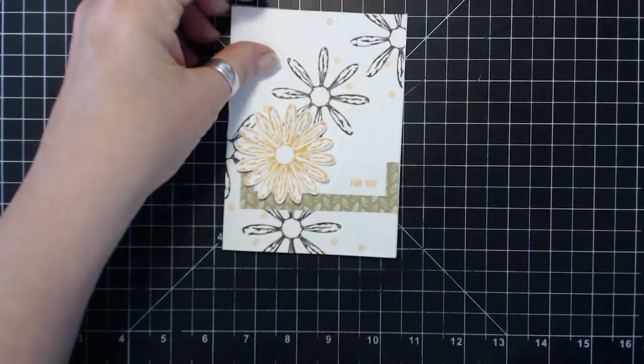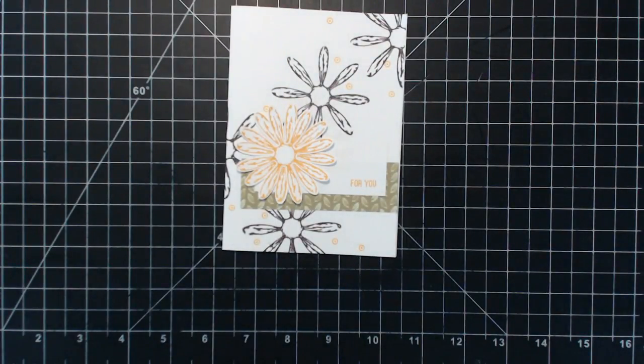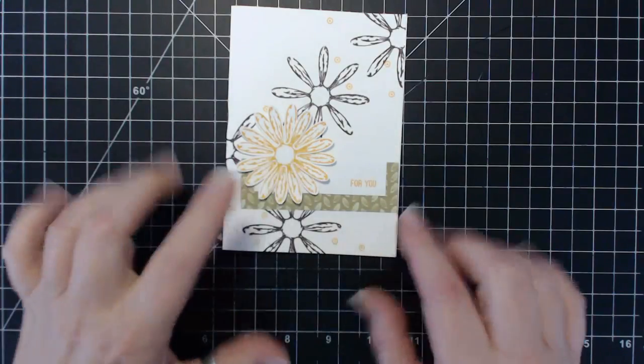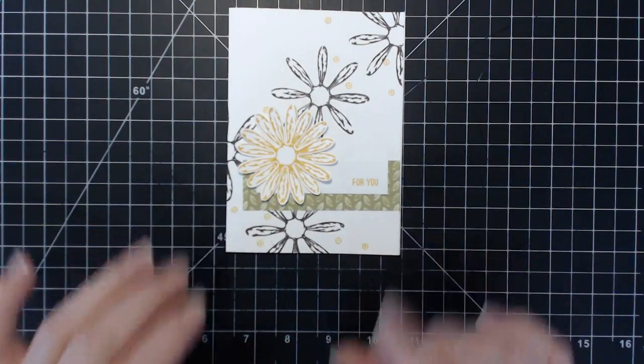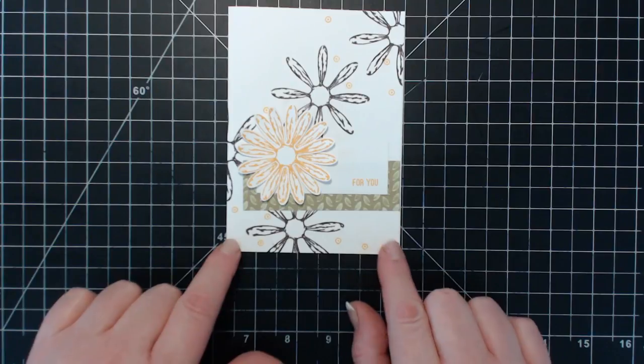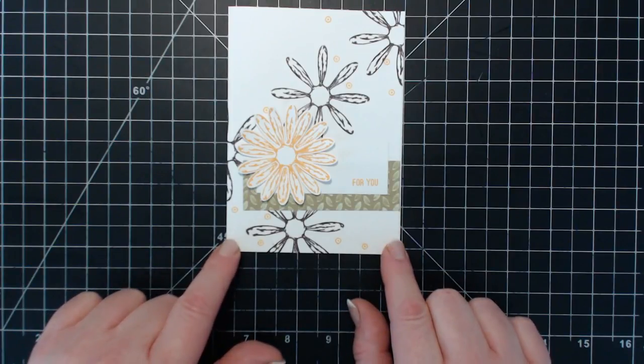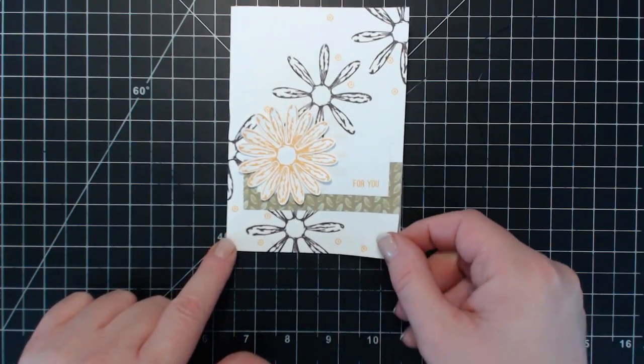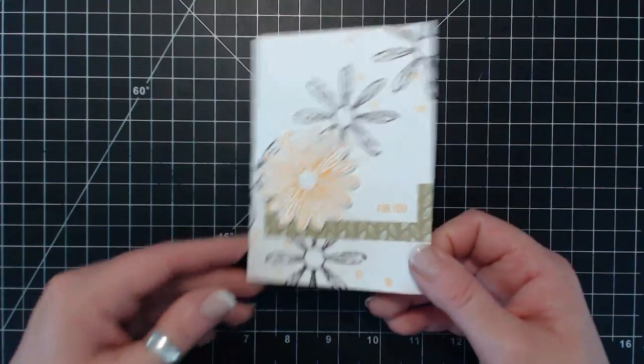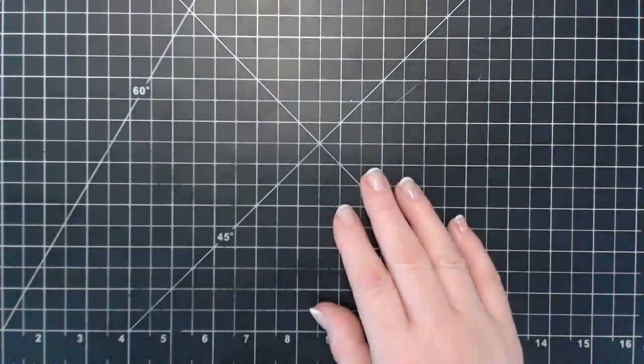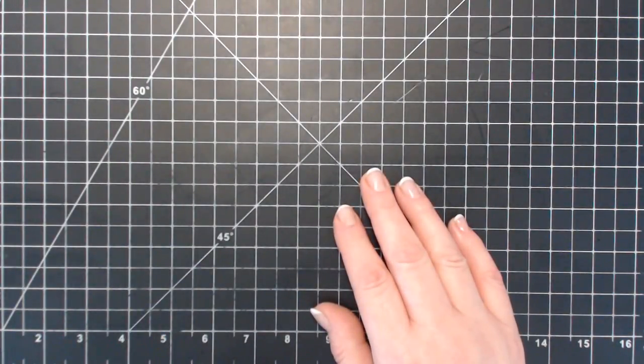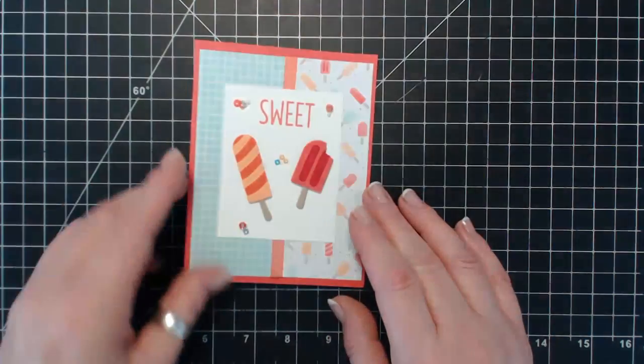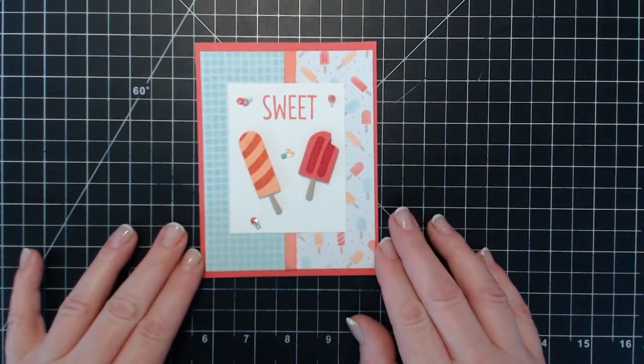Here's another card using that same Daisy punch and stamp set and paper. This is from Martha Grower from Germany, and this was a RACK card. So if you don't know what RACK is, I belong to a group called the random act of kindness card group and we share cards with each other. I'm excited to share.